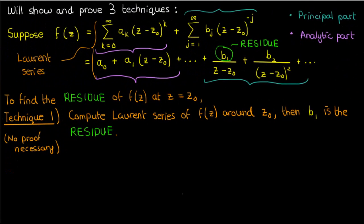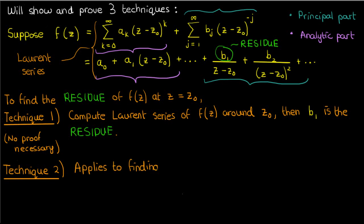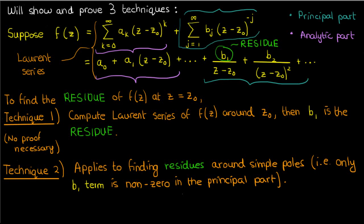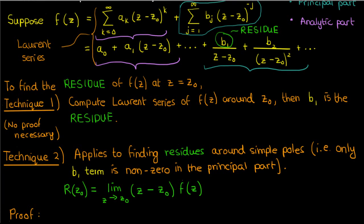The second technique applies to cases where you can't or don't want to find the Laurent expansion. It specifically applies when your function f of z has a simple pole at z0. A simple pole means the Laurent expansion of f only goes up to the 1 over (z minus z0) term — so the principal part has only b1 as the non-trivial term, everything else is zero. All you do is multiply f of z by (z minus z0) and take the limit as z approaches z0. Proving this technique is fairly simple.